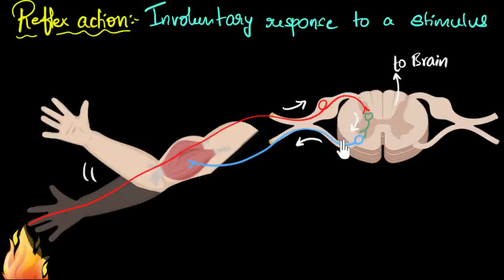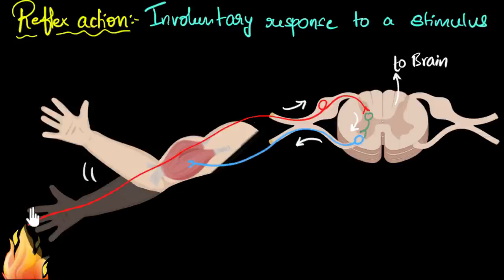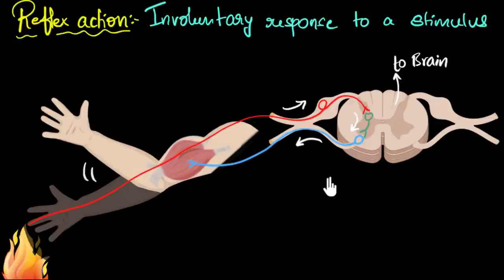Why are we not waiting for the brain to process the information and then give the command? If we had to wait for the brain to think about it and then decide what to do, in that time the damage would have already been done. Because this is a dangerous situation for our survival, we need immediate action — and in such cases, it does not wait for your brain. Since reflex actions are super important for our survival, we still have them even though we have a complex brain. In fact, reflex actions evolved first, before complex intelligence evolved, because they are the ones that ensure your survival.